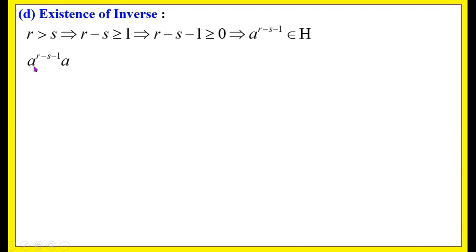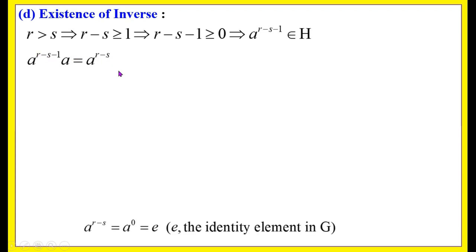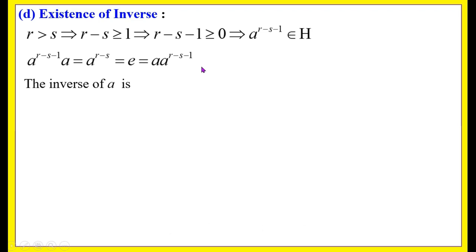Now multiplying a^(r-s-1) by a: a^(r-s-1) · a¹ = a^(r-s-1+1) = a^(r-s) = e, as proved previously. This can also be written as a · a^(r-s-1) = e. Thus the inverse of a is a^(r-s-1), that is, a⁻¹ = a^(r-s-1).